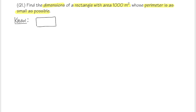We don't know the dimensions, so whenever we don't know anything, let's label them with variables. We have two unknowns — length and width. I'll use x and y: x is usually horizontal and y is usually vertical. The area based on our picture is x times y, and that must equal 1000. That's all the information we know.